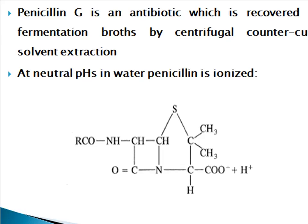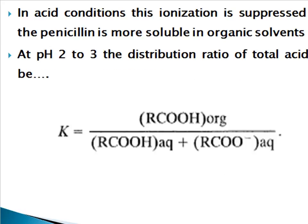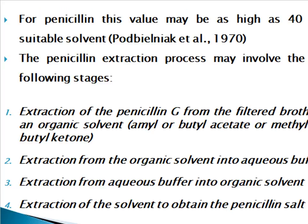At neutral pH in water, penicillin is present in its anionic form. This is the structure of 6-aminopenicillanic acid, the basic structure of penicillin. In acid conditions, this ionization is suppressed and the penicillin is more soluble in organic solvents. At pH 2 to 3, the distribution ratio of total penicillin is K = penicillin in organic solvent divided by penicillin in aqueous form plus the anionic form in aqueous phase.